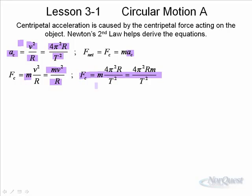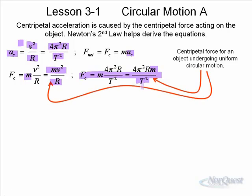Understand what each term means: r is the radius of the circular path, m is the mass of the object undergoing circular motion, and T is the period of rotation — the time it takes to complete one revolution. These are the two formulas for centripetal force for an object undergoing uniform circular motion, and generally both centripetal acceleration and centripetal force equations will appear on a formula sheet.